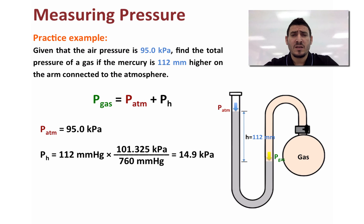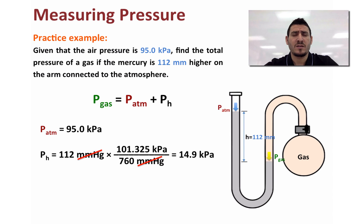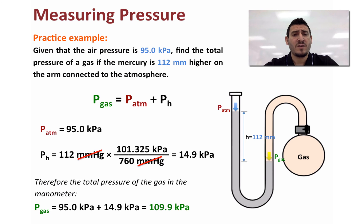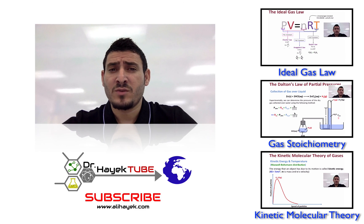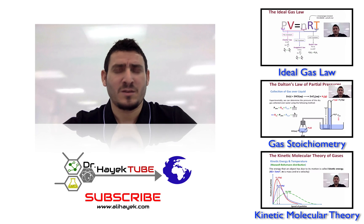P_h is calculated from the mercury level difference of 112 mm Hg, multiplied by the conversion factor (101.325 kPa / 760 mm Hg), giving 14.9 kPa. The pressure of the gas is therefore 95.0 kPa plus 14.9 kPa, which equals 109.9 kPa. I hope this video was helpful — please like, share, and subscribe, and I'll see you next time.